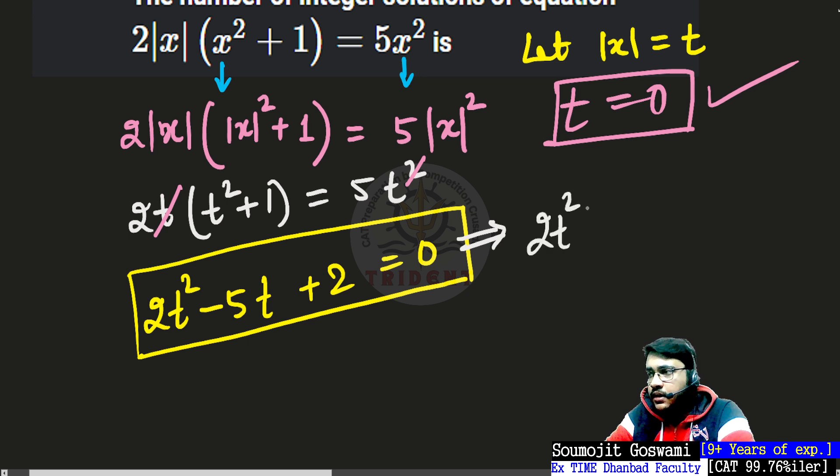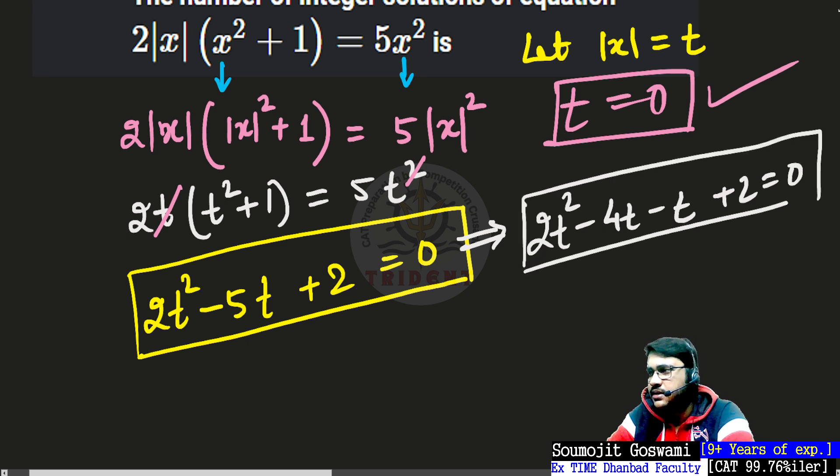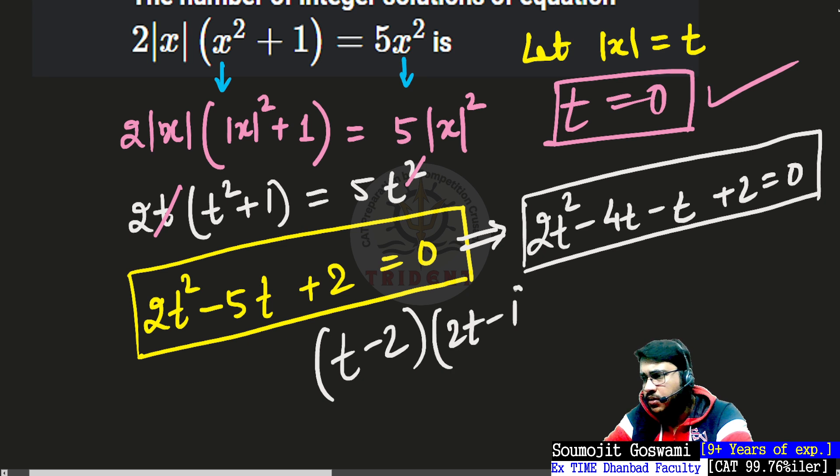This is going to be 2t squared minus 4t minus t plus 2 equals 0. At this point, this is mental math now. If you want to aim for 99 percentile you should know ideally that what the values for this expression will be. It will be t minus 2 times 2t minus 1 equals 0. This will give you t as 2 or 1 by 2.